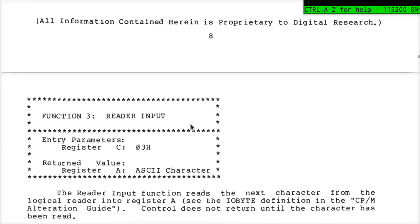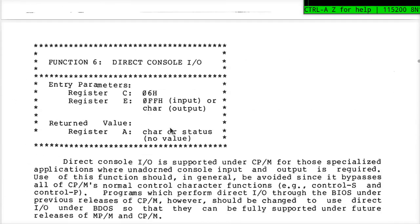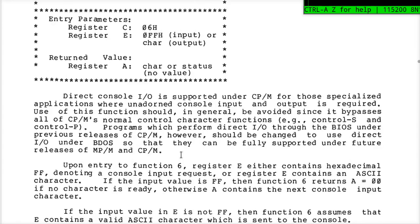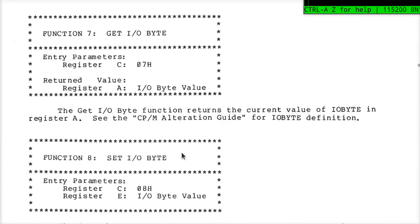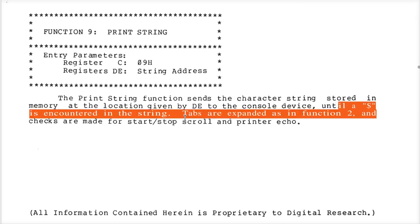Notice there's a dollar sign here at the end of the string. Normally I'd put a null — a zero — at the end of my strings. What's this dollar doing? Well, if you look up function 9, the print string function: put a 9 in C, put the string's starting address in the DE register. It says: print the character string stored in memory at DE, one at a time, until it finds a dollar sign.